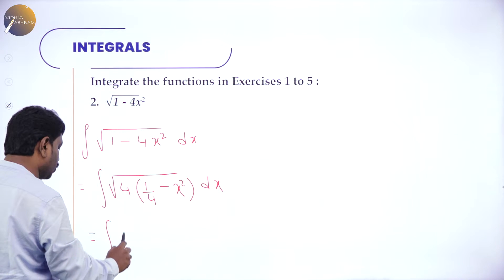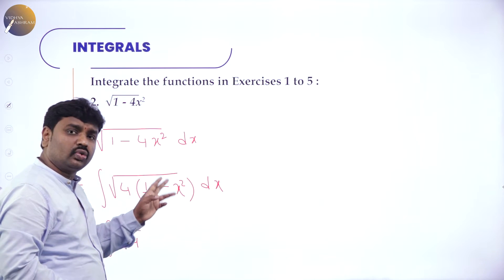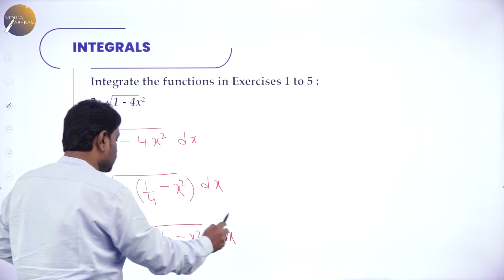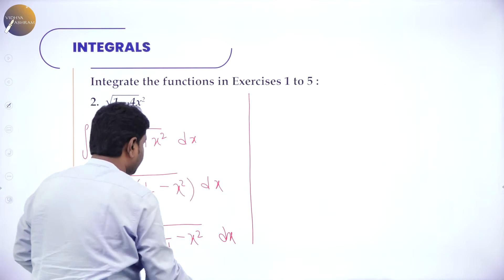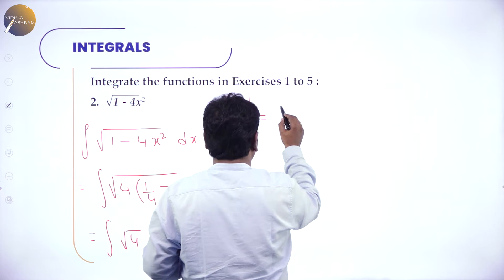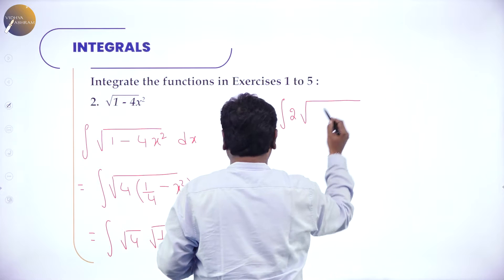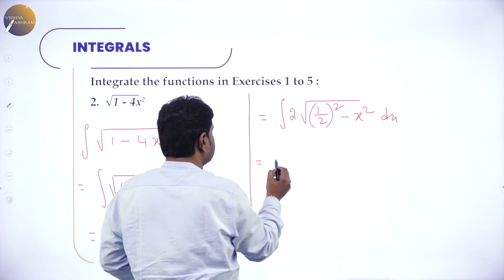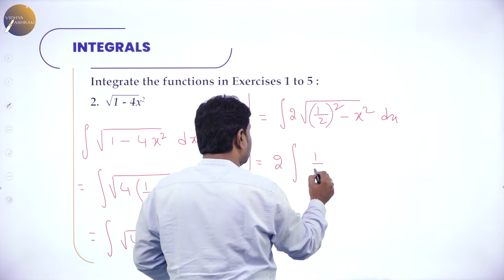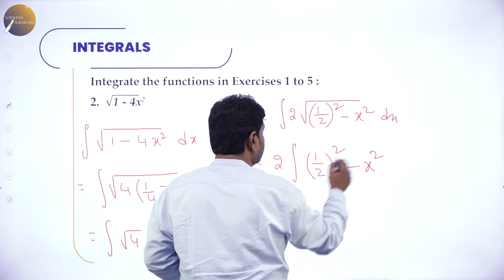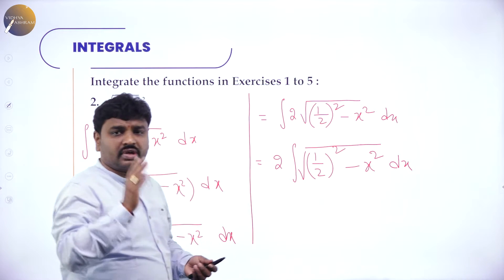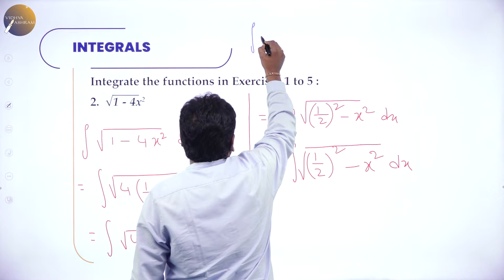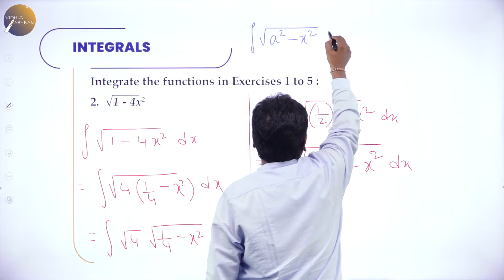Further I can write it as ∫√4 · √(1/4 - x²) dx, since √(a·b) = √a · √b. You know √4 = 2, so I write this as 2 · ∫√((1/2)² - x²) dx. Taking 2 as a constant outside, again it is in the form √(a² - x²) and we know the formula.